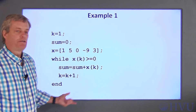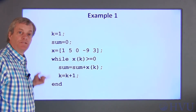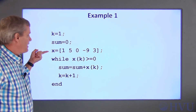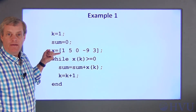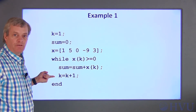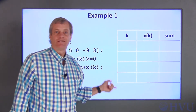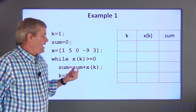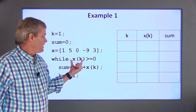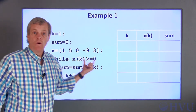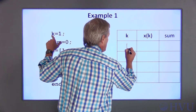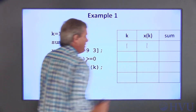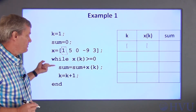In this example, I want to determine the final value of sum from a given code. First, k is initialized as 1 and sum as 0, and x is initialized as an array. I'll fill out a table as the loop executes to help keep track of what's going on. The logical expression in the while statement checks whether x of k is greater than or equal to 0. When the loop is entered for the first time, k is equal to 1, so x of k is the first element in the array, which is 1. Since 1 is greater than or equal to 0, I enter the loop.